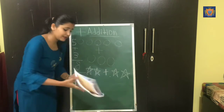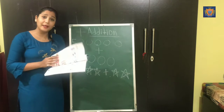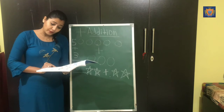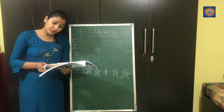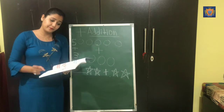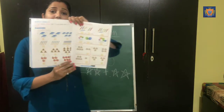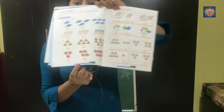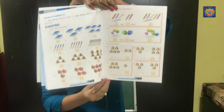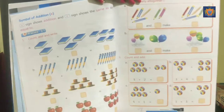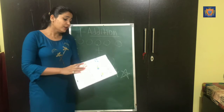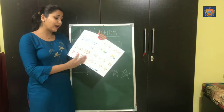So aapki book mein jo exercise di hai, sabse pehle page number twenty-four, aur uske baad exercise page number twenty-five. These are the two pages — twenty-four and twenty-five. So kya method diya hai? Count, add, and write. Simply you have to count.